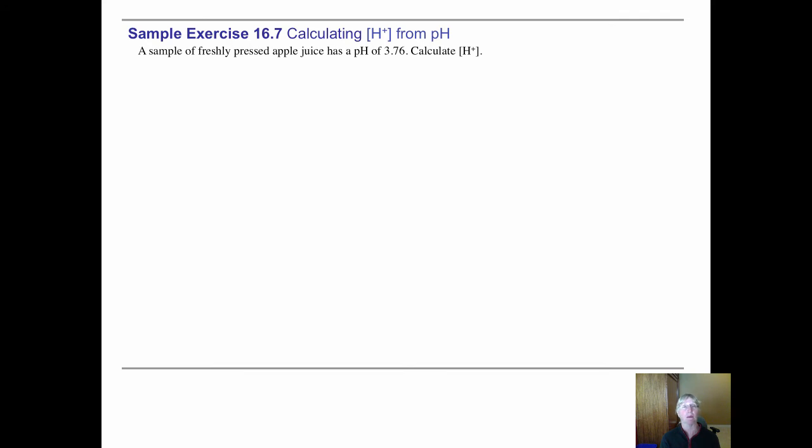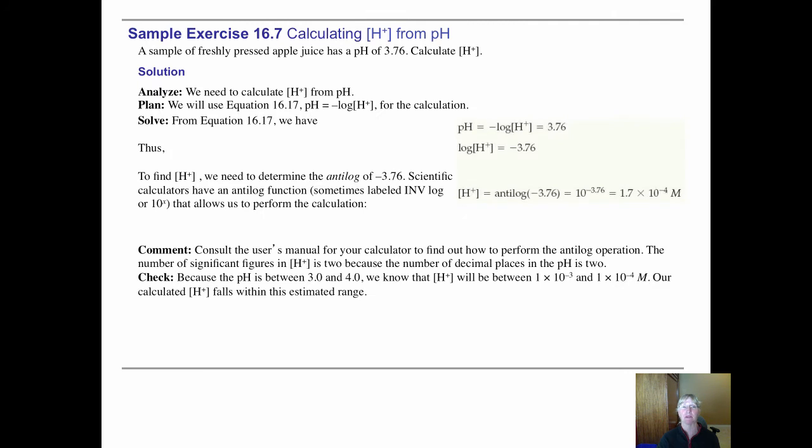You can go backwards by taking what we call an anti-log. On your calculator, that would be shift or second log, and the only thing you have to remember is to put in a negative sign in front of the pH. So you would take the anti-log as 10 to the negative 3.76, and you would hit enter and find out that your hydrogen must have been something around 10 to the minus 4, which makes sense because that's the pH somewhere around 4. Make sure you know how your calculator works, or if you borrow one, that you're using the correct syntax. It matters on these problems quite a bit.